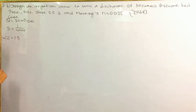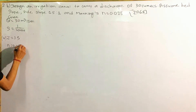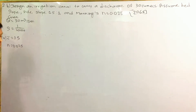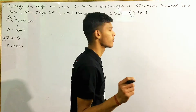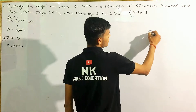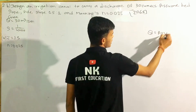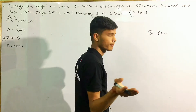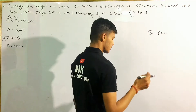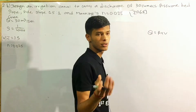Manning's n is 0.025. If you want to see the formula, Q is equal to Area into Velocity. It is simple — you can do it. If you want to see the difference, refer to the last video.